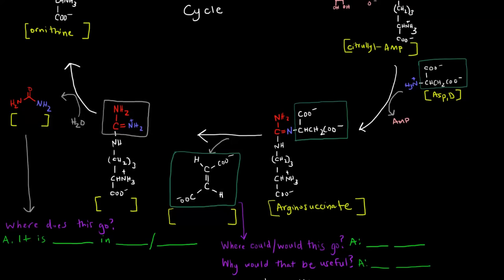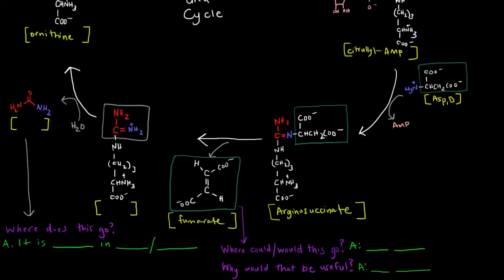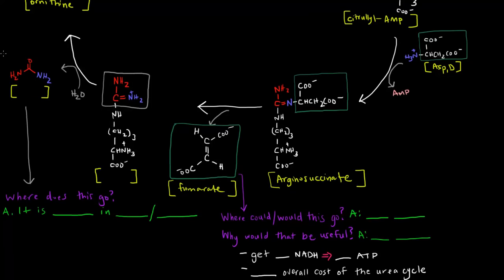Arginosuccinate, what's going to happen to that is that the succinate is going to come off as a fumarate. Now, that's important because this fumarate, you should know, is part of which pathway that we've talked about before. This could go to the TCA cycle or the Krebs cycle. And why is that important? Why would that be useful?